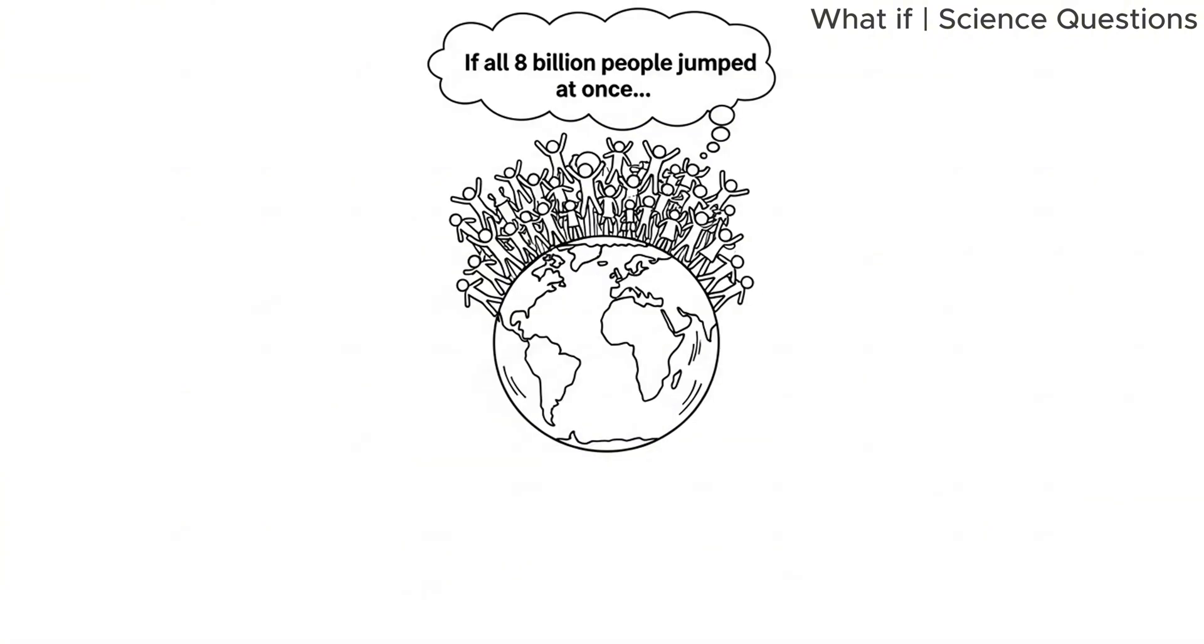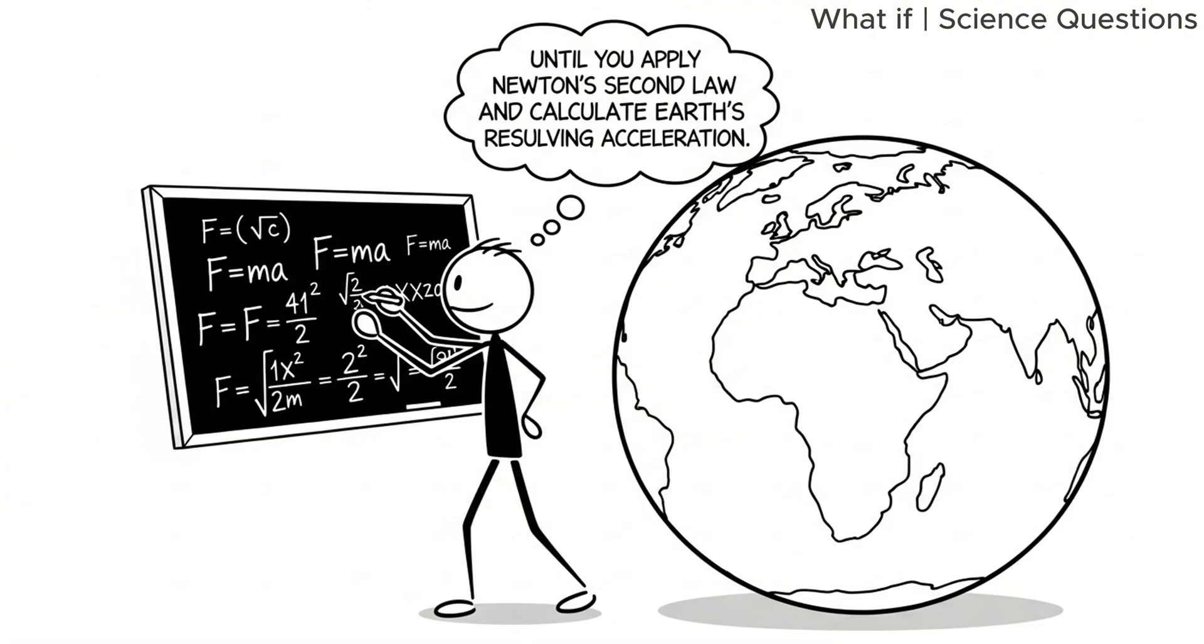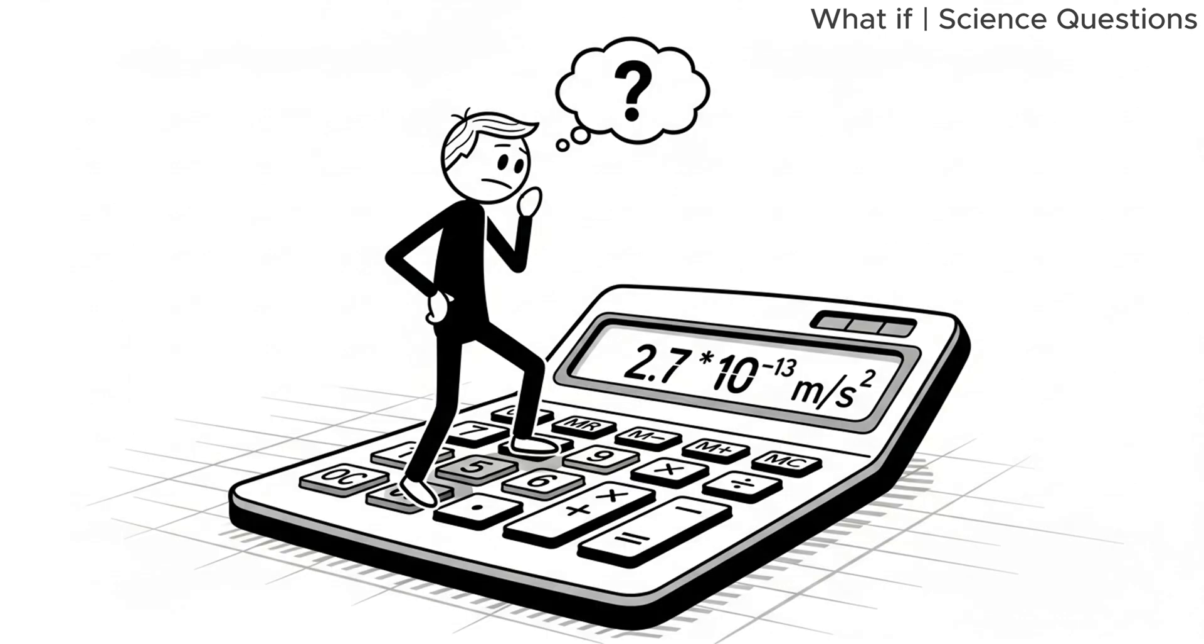If all 8 billion people jumped at once, and each of them managed to generate, say, 200 newtons of force, you'd get a total downward force of about 1.6 trillion newtons. That sounds impressive. Until you apply Newton's second law and calculate Earth's resulting acceleration, it comes out to roughly 2.7 times 10 to the negative 13 meters per second squared.